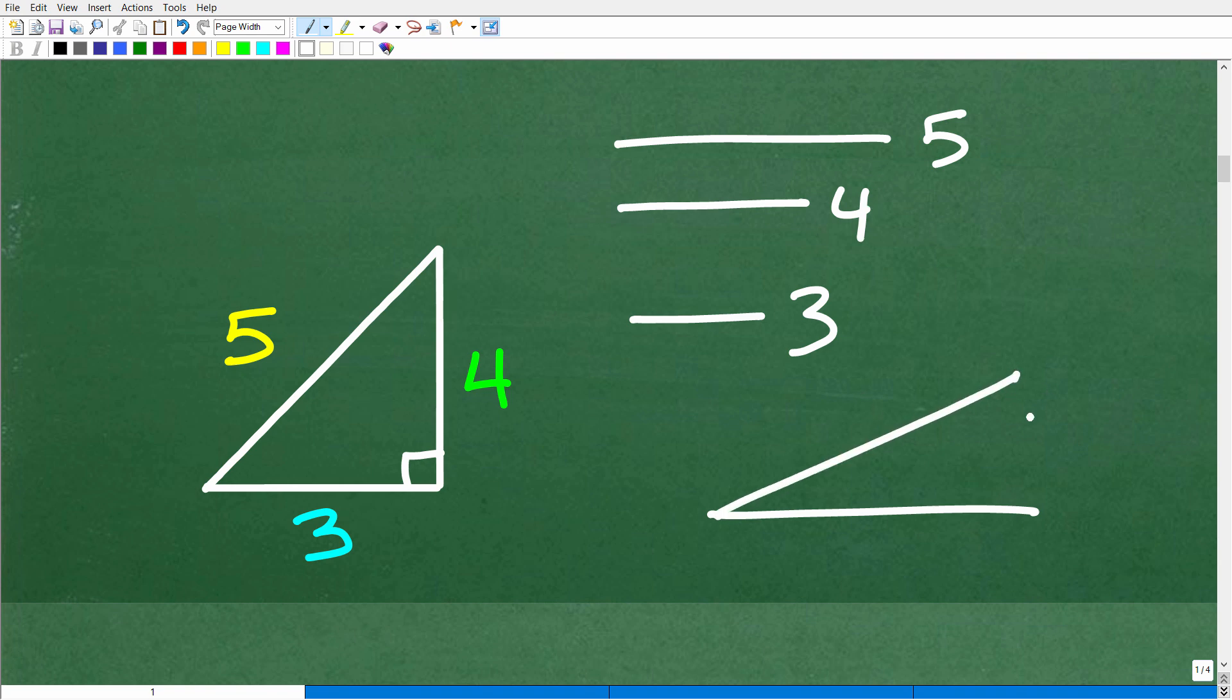But what if we had a scenario like this, 5, 4, and maybe like just 1. Now, could we build a triangle from these measures? Well, that might be kind of difficult. So you could put your 5 right here, and then we're trying to close this as a triangle.